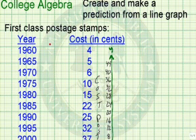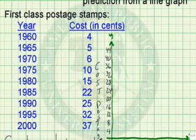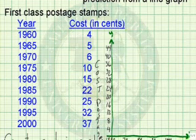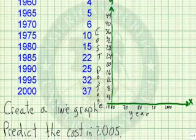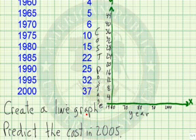Stamps in 1960 cost 4 cents, and as we go down the years you'll notice that it has increased. What we can do with this information is create a line graph and then try to predict the cost in 2005.